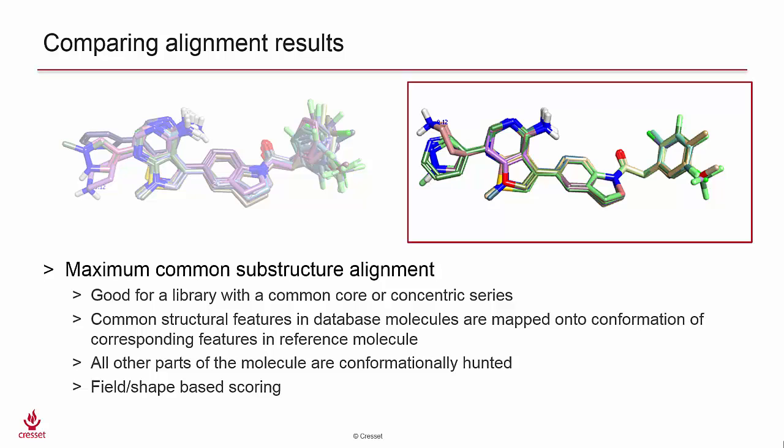While the field-based alignment may provide a sensible alignment of features in the context of what the protein receptor sees, the maximum common substructure method produces an alignment where common substructure is overlaid so that non-common features can be quickly isolated and examined, very much a ligand-centric approach.